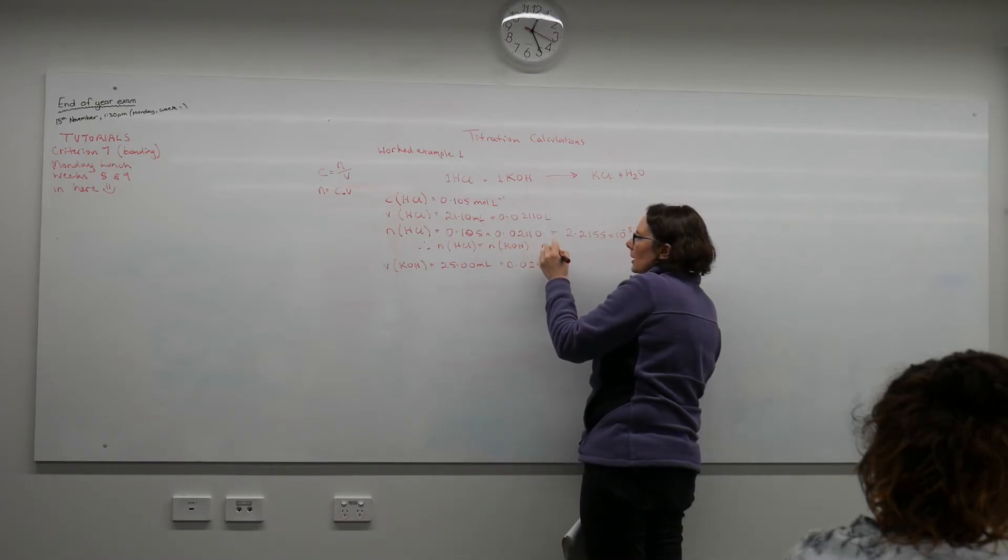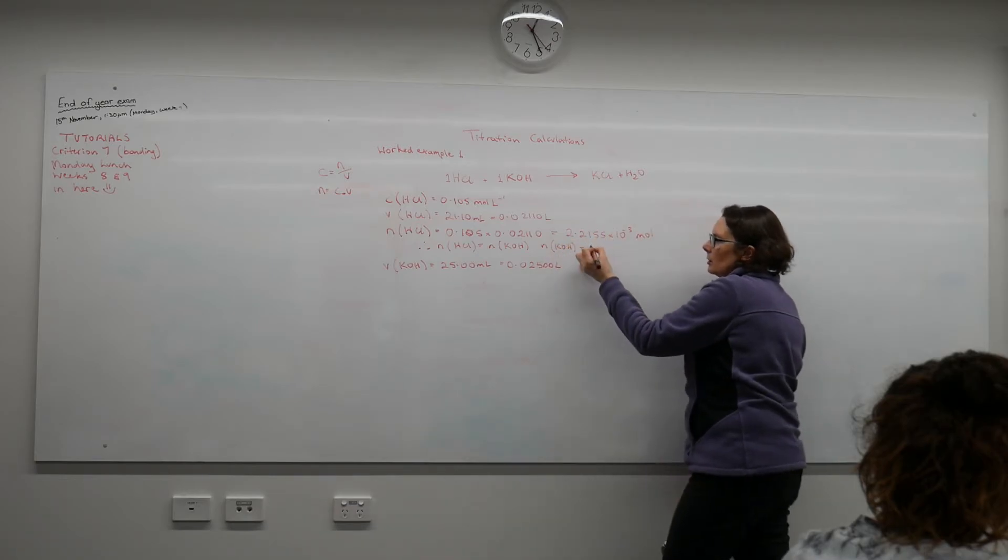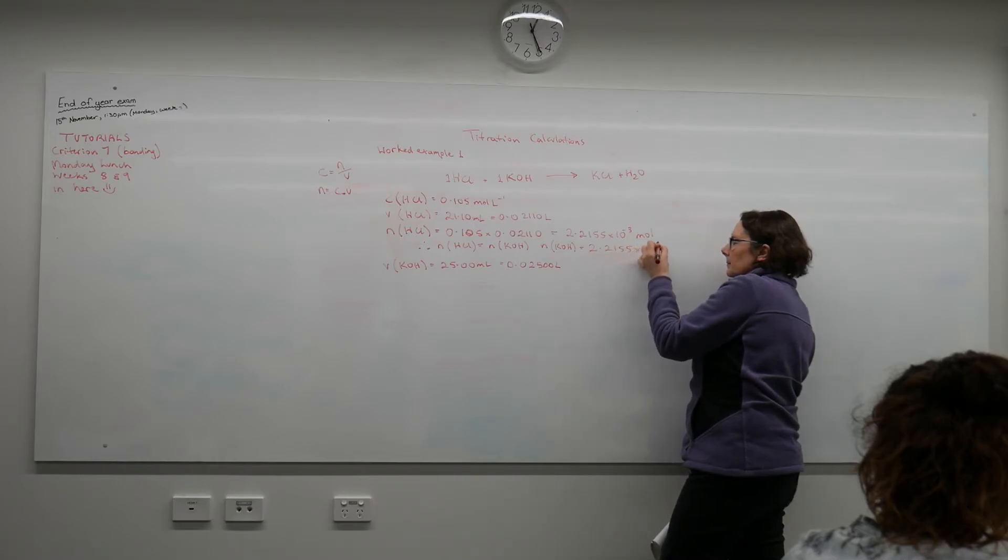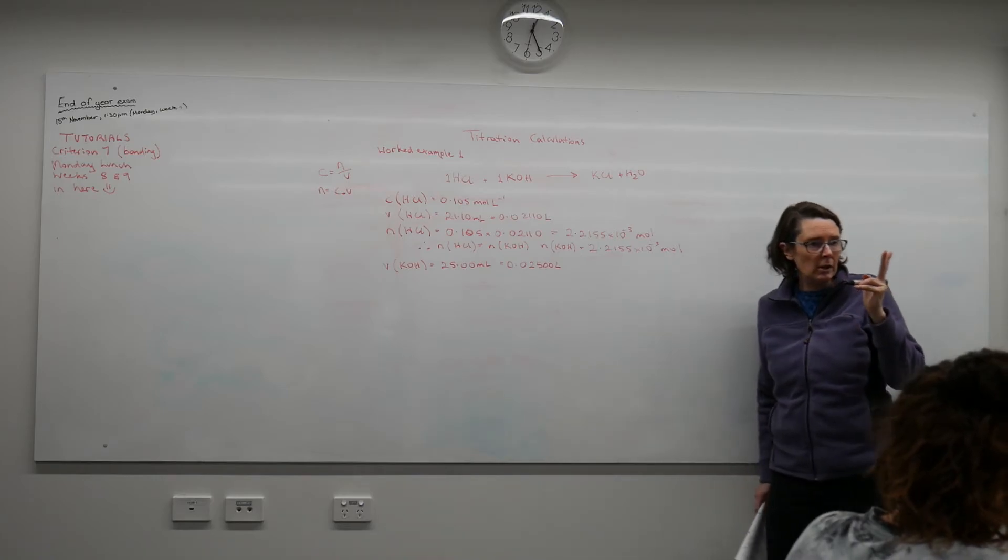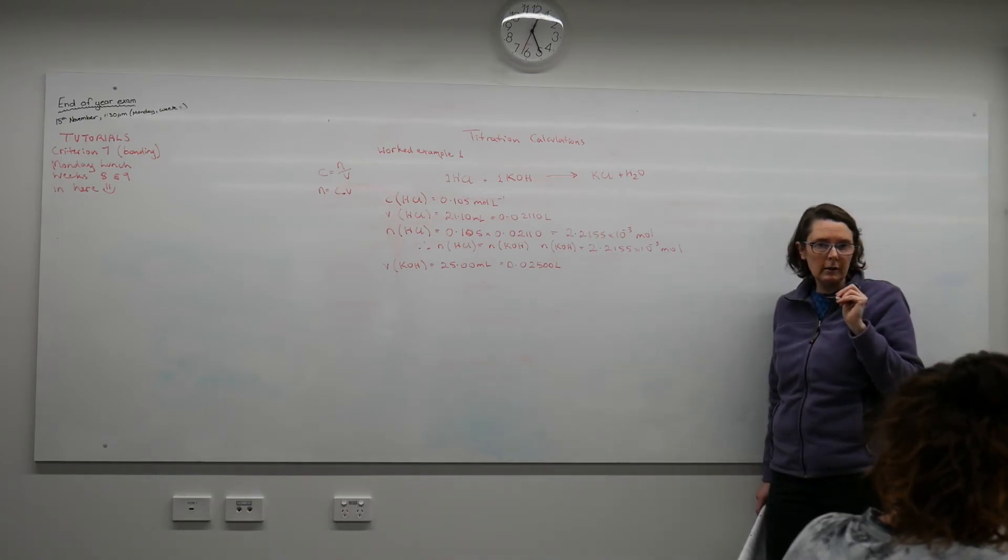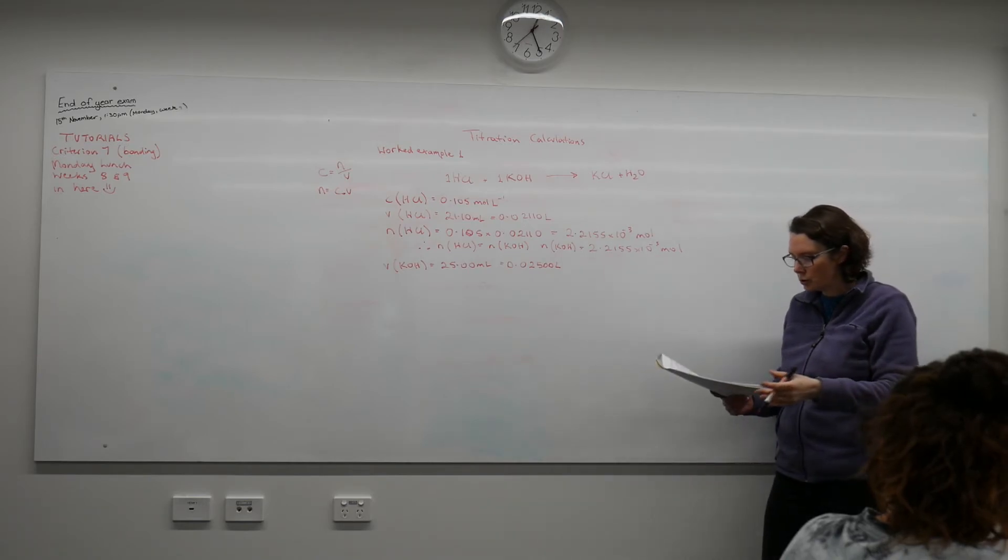And my moles of KOH is equal to this, and that I already calculated. Now I have two pieces of information for my potassium hydroxide, and I only need to find the remaining one, which was the concentration.